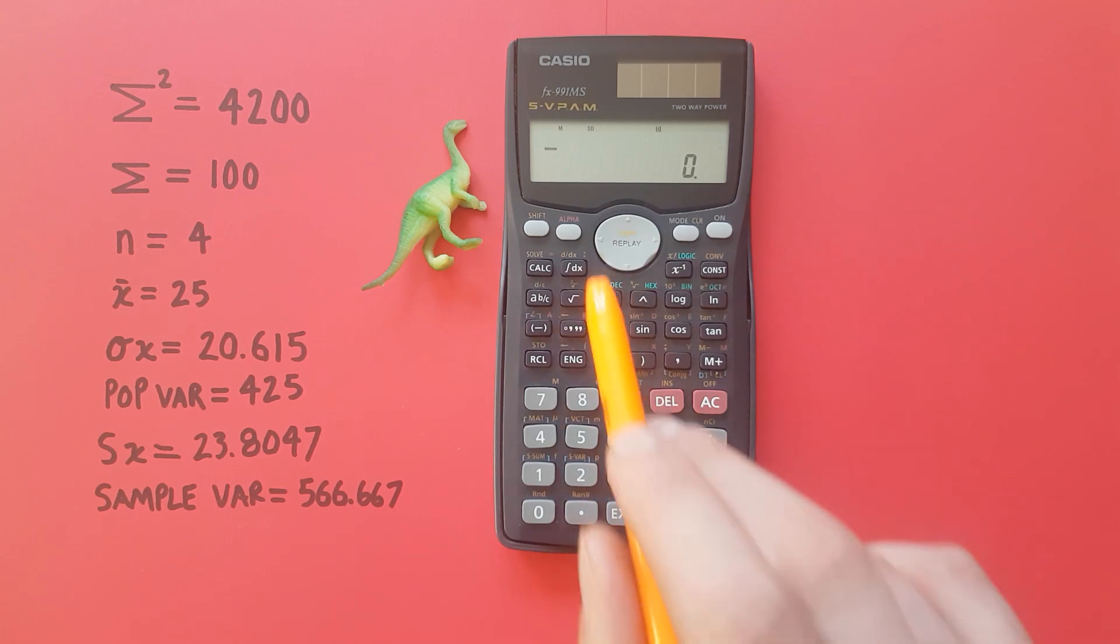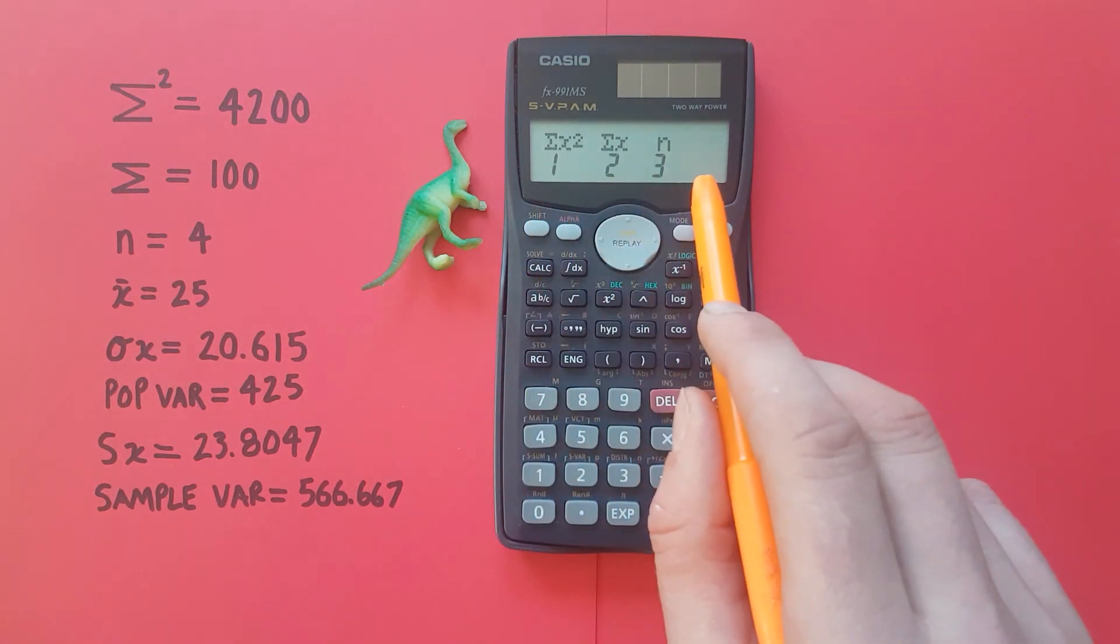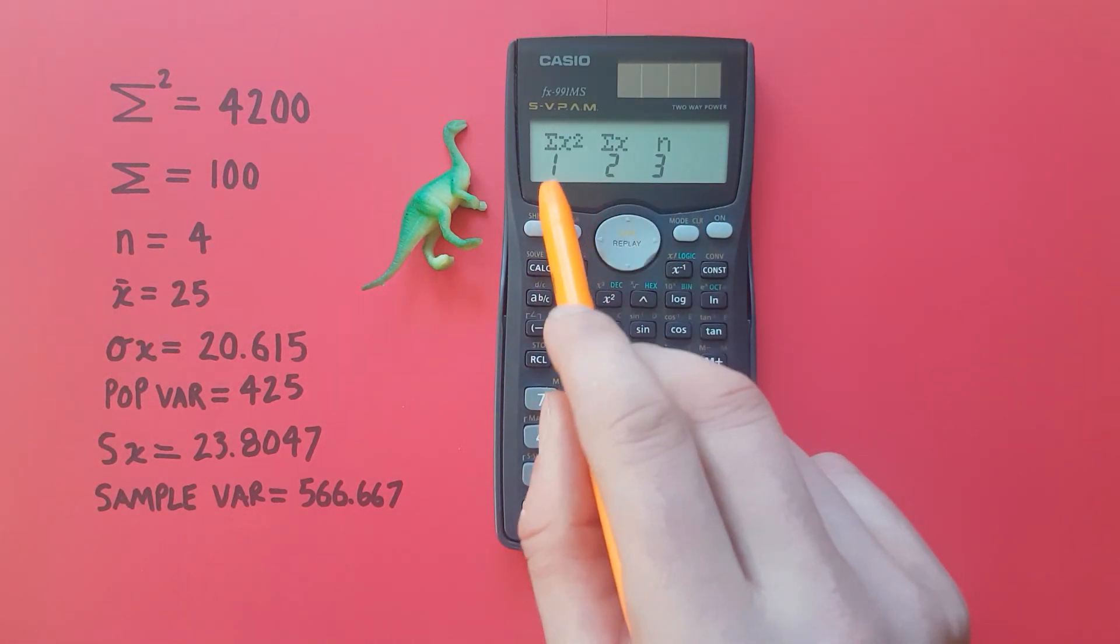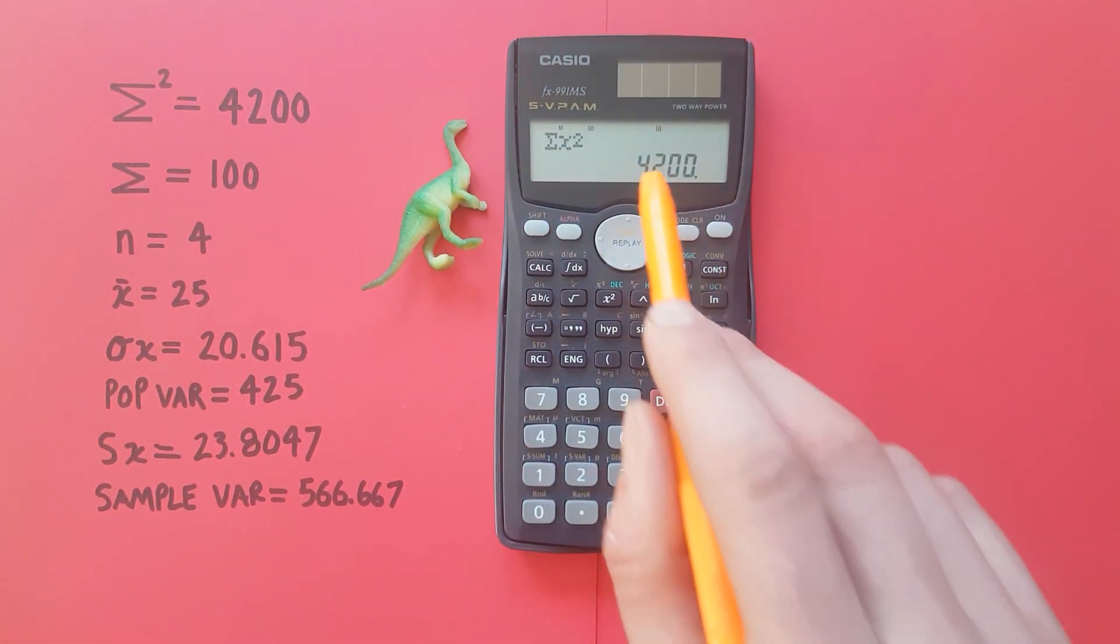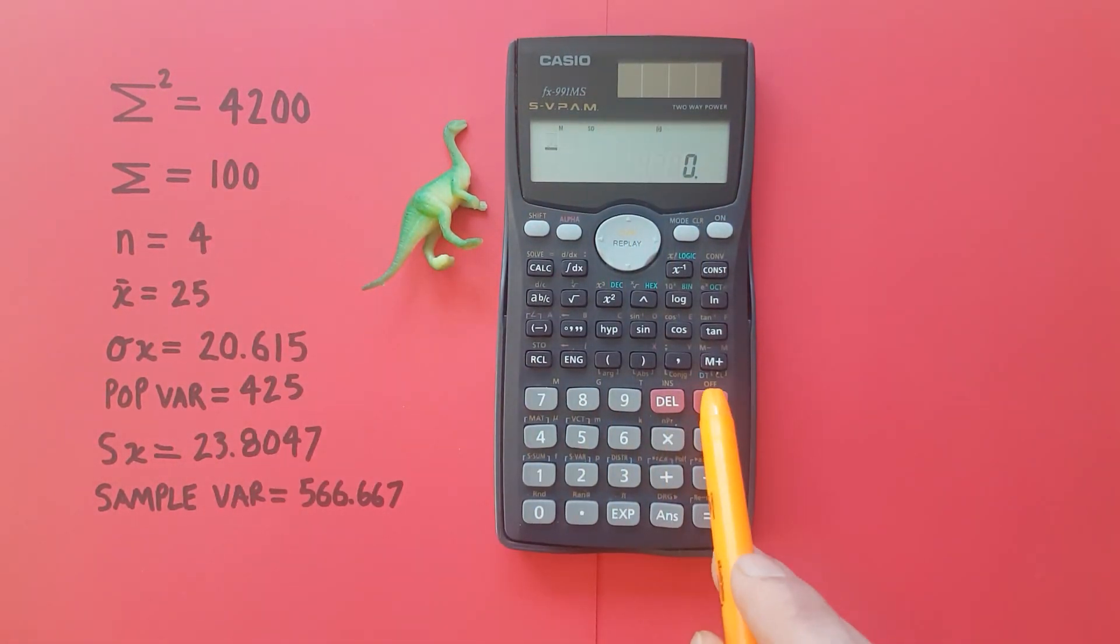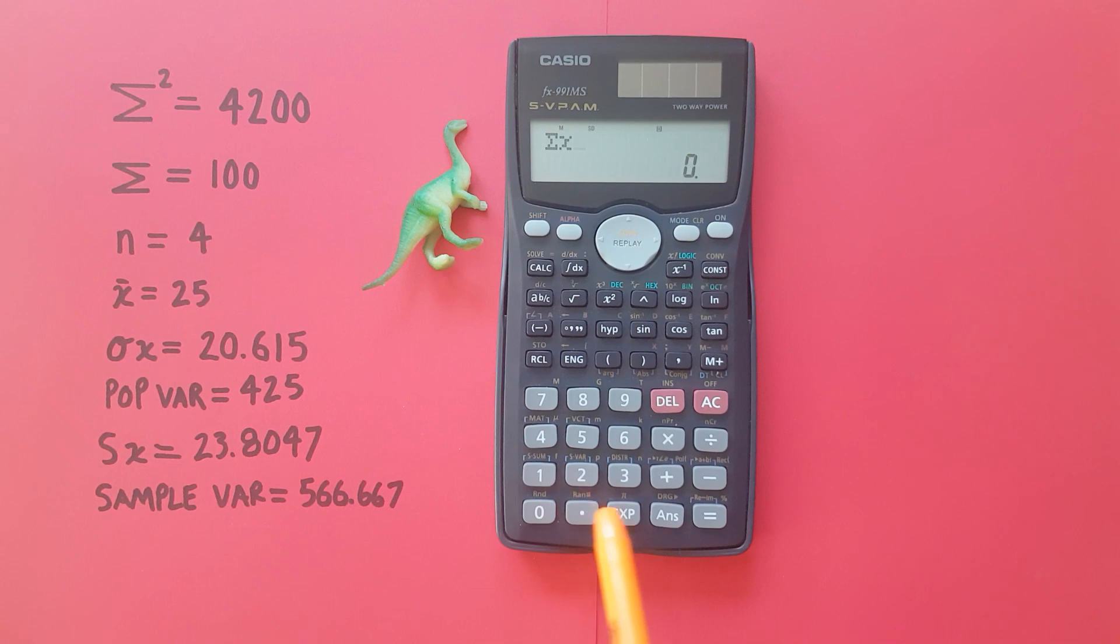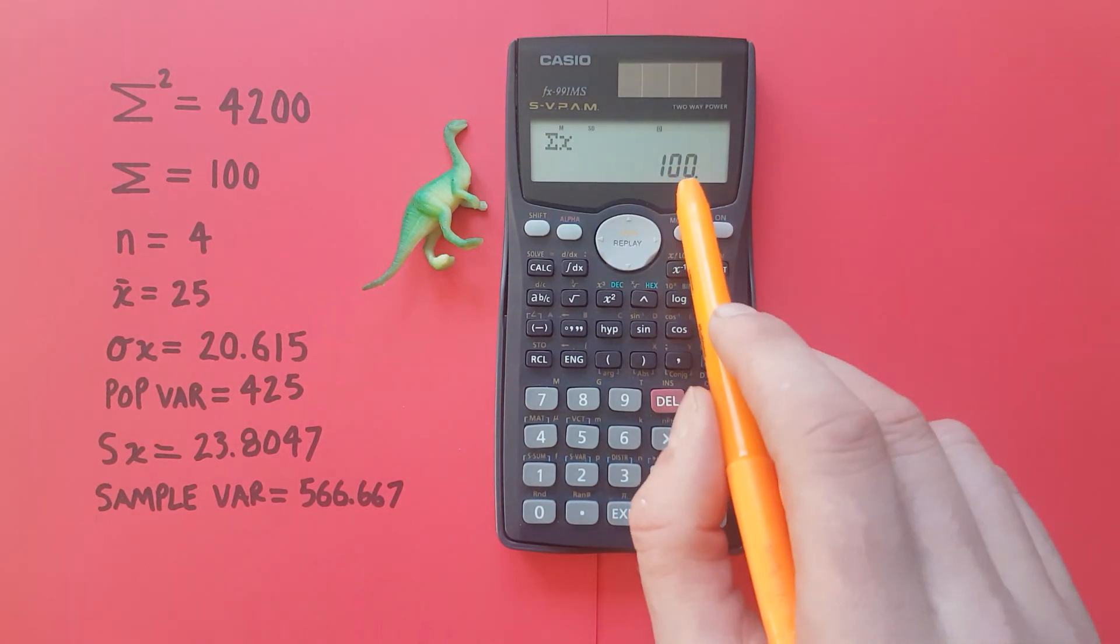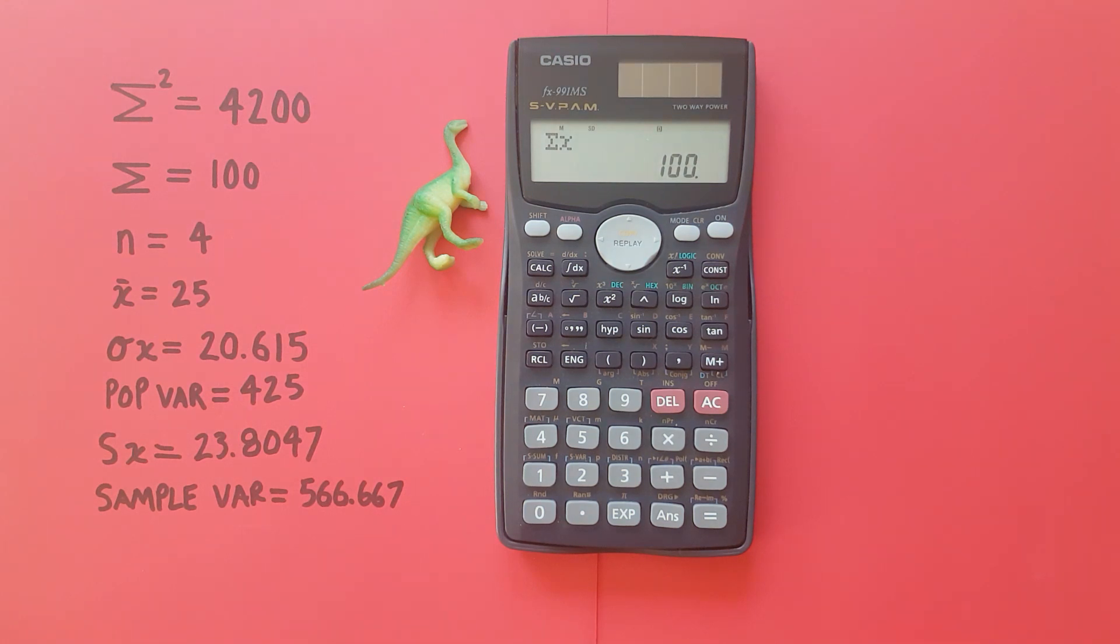So to get started we press shift 1 and that brings up this menu. If we take the first option this gives us the sum of squares of our data set. So there we go sum of squares equals 4200. Again shift 1. If we choose the second option this is the sum of our data set which is 100. Makes sense. 20 plus 10 plus 10 plus 60 equals 100.